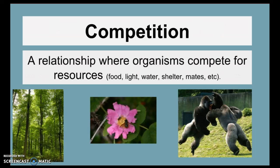Then we have competition. That's where organisms are competing for resources — they need the same things, and so they're going to fight over them. For example, we have trees competing for light, some bugs competing for pollen on this flower, and then these gorillas who may be competing over shelter, food, a mate, or territory. It looks pretty terrifying, actually.